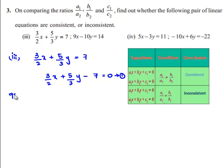And the second equation is 9x - 10y = 14. This equation can be written as 9x - 10y - 14 = 0. This is equation number 2.